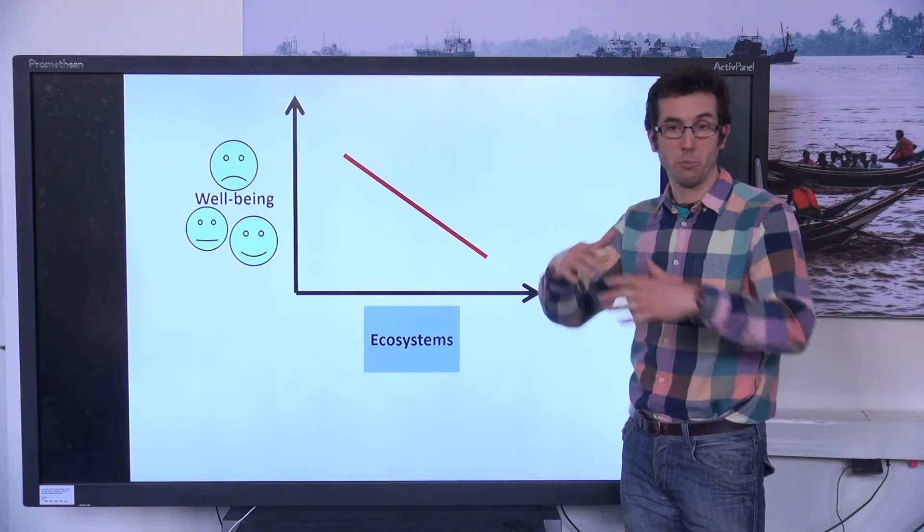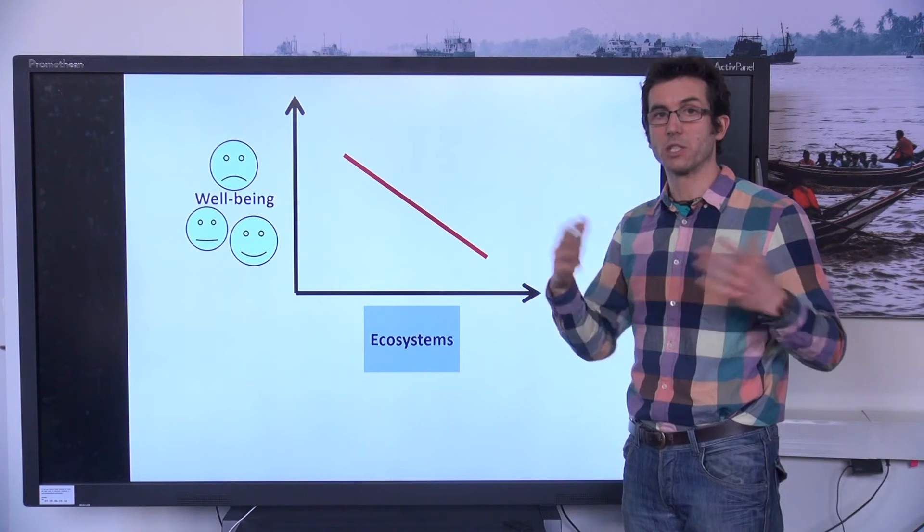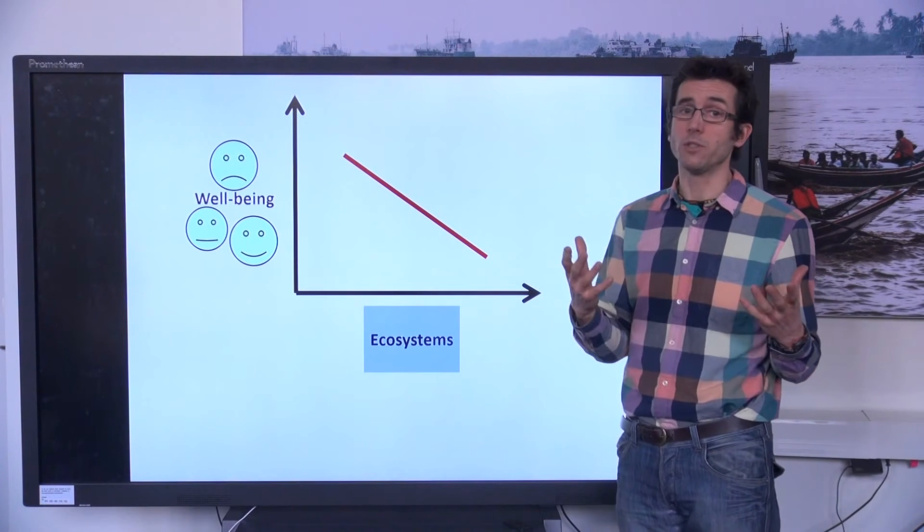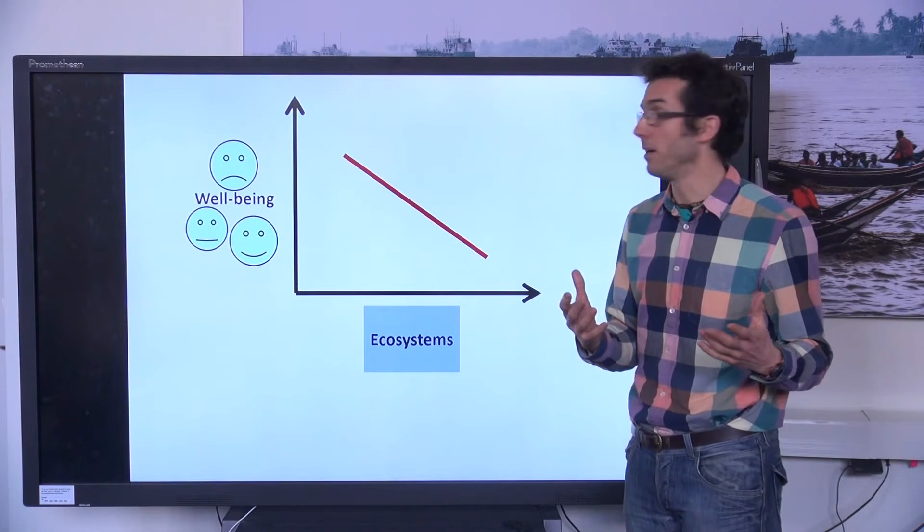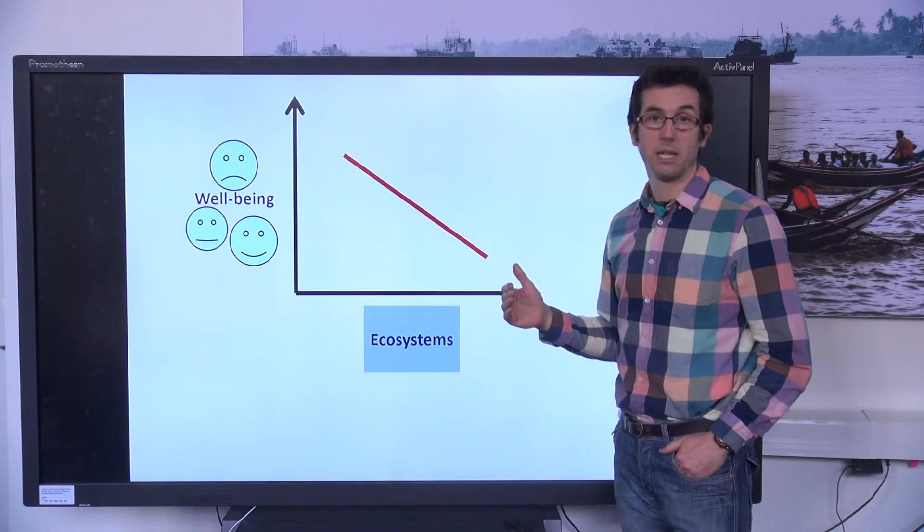So for example, in a protected area, if you put a fence around it and you exclude people from it, the ecosystems might regenerate within that area, but the well-being of the excluded people might decline.